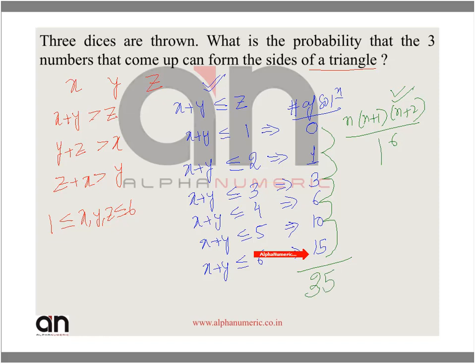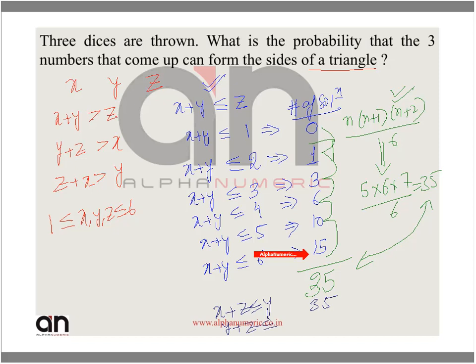So there are 35 cases in which x plus y is less than or equal to z. By symmetry, there will also be 35 cases where x plus z is less than or equal to y, and 35 more cases where y plus z is less than or equal to x. Therefore, the total number of failing cases is 35 plus 35 plus 35, which equals 105.